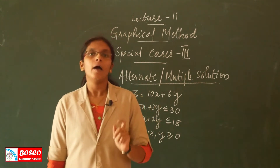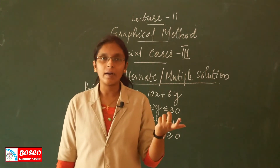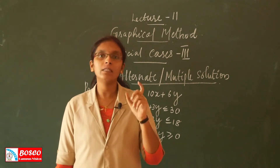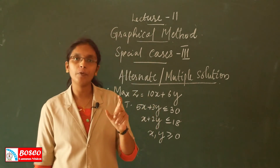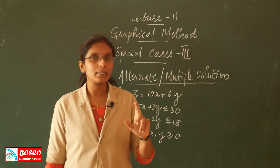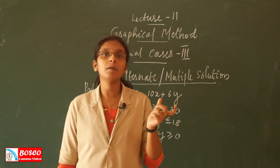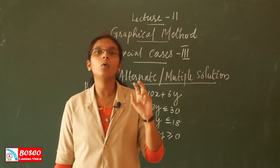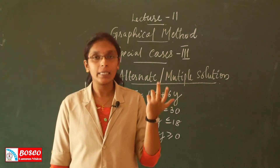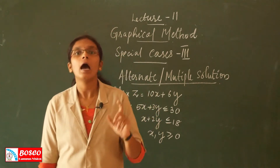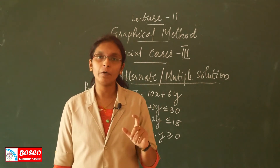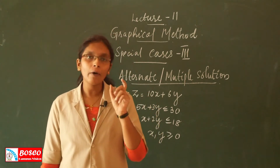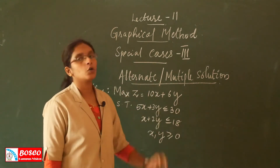If we consider the objective function values and they repeat — that is, the optimization process satisfies multiple points — then in the case of the decision variables, we set the objective function values and the decision variables values. This becomes an alternative solution, also called the multiple solution.